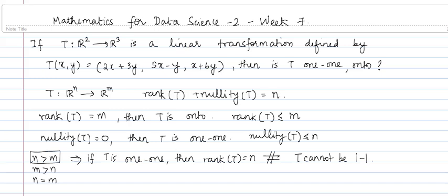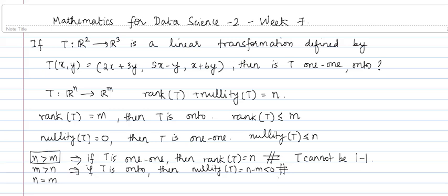What happens in the case when m is greater than n? That is, the dimension of the codomain is greater than the dimension of the domain. In this case, if T is onto, then we know that the rank of T has to be equal to m, and from the rank-nullity dimension theorem, we will have nullity of T equal to n minus m. But since n is strictly less than m, n minus m is going to be less than 0, which is not possible.